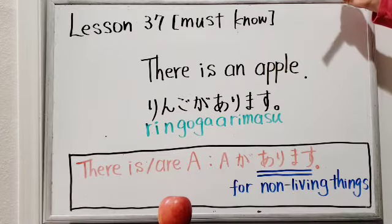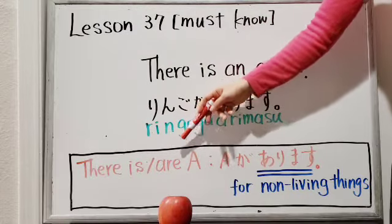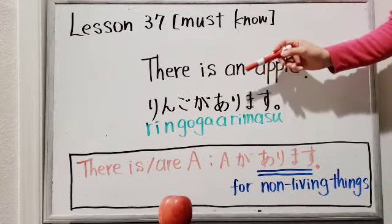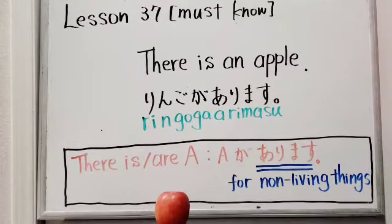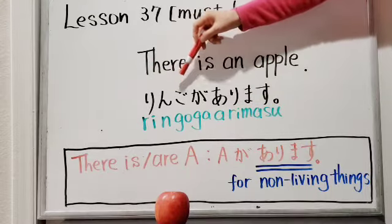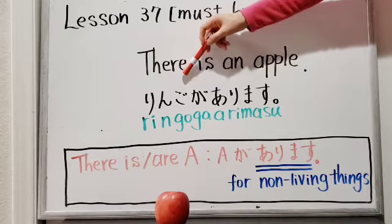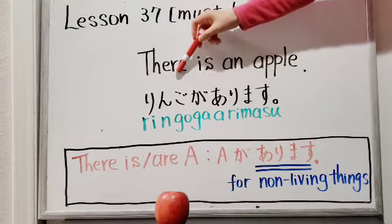So basically, if you want to say 'There is' or 'There are' in Japanese, you can say: [subject] が あります。In this Japanese sentence, リンゴ is the subject, so が comes after the subject.